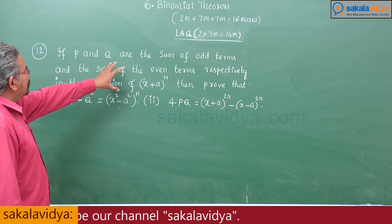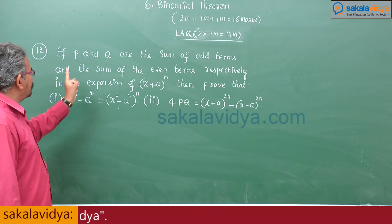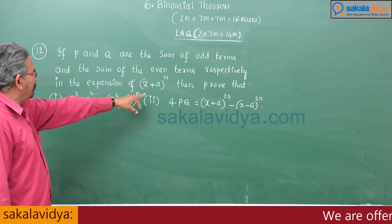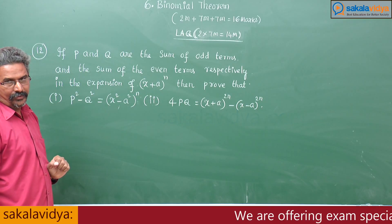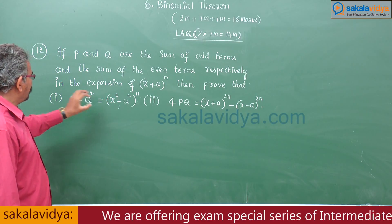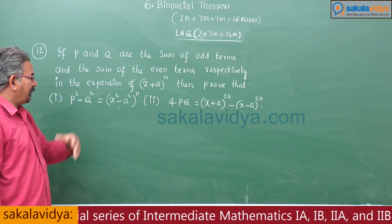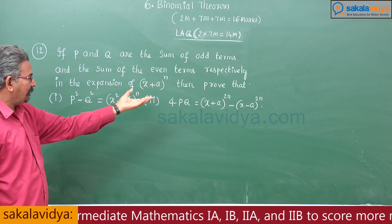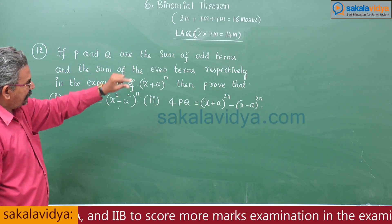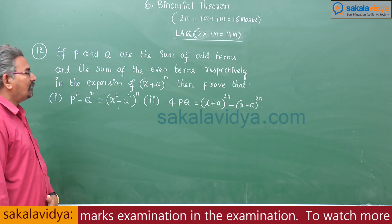P is the sum of the odd terms, whereas Q is the sum of the even terms of the expansion (x + a)^n. We have to prove that P² - Q² = (x² - a²)^n, and the second one, 4PQ = (x + a)^2n - (x - a)^2n.